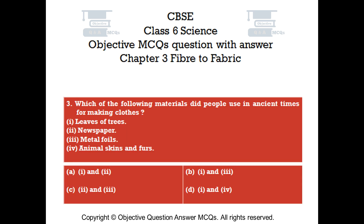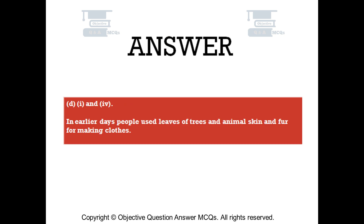Question number 3. Which of the following materials did people use in ancient times for making clothes? 1. Leaves of trees, 2. Newspaper, 3. Metal foils, 4. Animal skins and furs. Option A: 1 and 2. Option B: 1 and 3. Option C: 2 and 3. Option D: 1 and 4. The right answer is option D — 1 and 4. In earlier days, people used leaves of trees and animal skin and fur for making clothes.